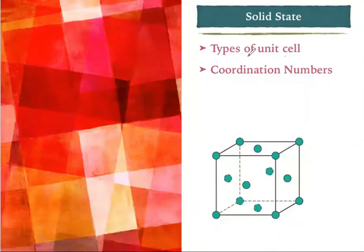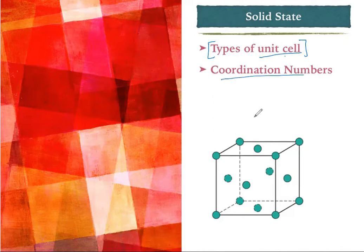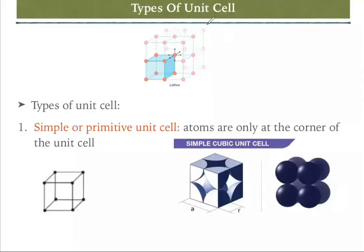Welcome to the EdCam channel. In this video lecture we are going to talk about the next part of solid state. We will discuss about the types of unit cells and go into depth of these unit cells. Next we'll discuss about the coordination number, showing one unit cell arrangement and how many atoms are present in a specific unit cell. So let's start.